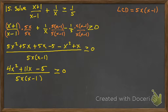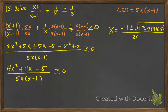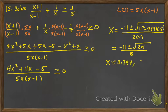Boundary points are where the top equals 0 — that's why we need the quadratic formula — or where the bottom equals 0, and the bottom is already factored. So x equals negative 11 plus or minus the square root of 11 squared minus 4 times 4 times negative 5, all over 2 times 4. That's negative 11 plus or minus the square root of 201, divided by 8. Plugging into a calculator gives approximately 0.397 and negative 3.147. Those are the x-intercepts, and the function can change sign at x-intercepts and also at vertical asymptotes.